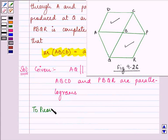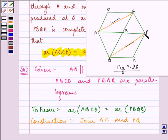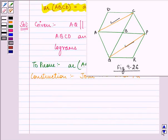Here we need to prove that the area of ABCD is equal to area of PBQR. Here we need to join A to C and Q. Now let us start with our proof.